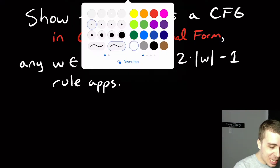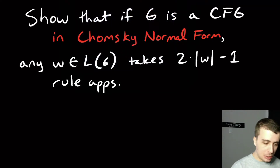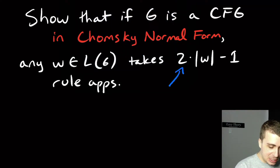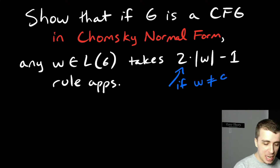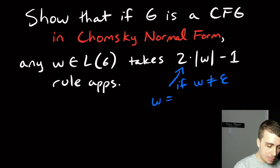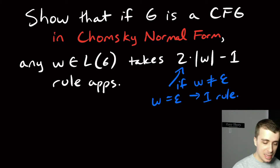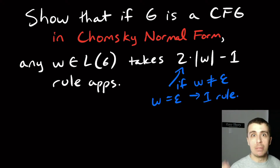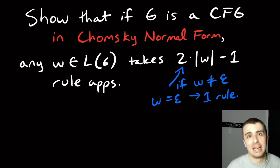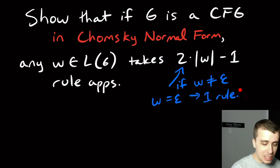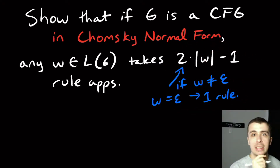This statement is true if the string w is not the empty string. But if it is the empty string, then it will take one rule. The statement's not true for that case because two times zero — which is the length of the empty string — minus one is negative one, which makes no sense. So it needs to be at least one. But other than this special case, it is two times the length of w minus one.